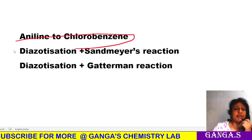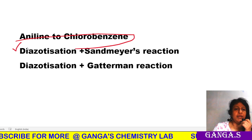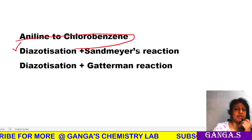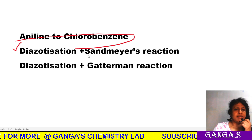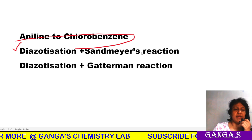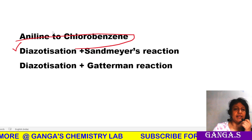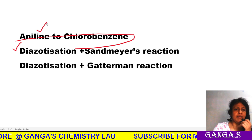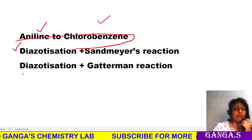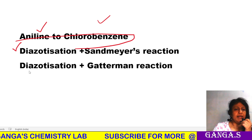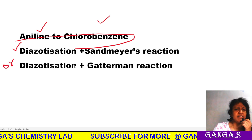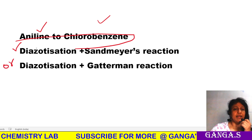In the two methods, one method is diazotization plus Sandmeyer reaction. Diazotization reaction gives chlorobenzene via the Sandmeyer reaction. In the other method, we have diazotization plus Gatterman reaction.